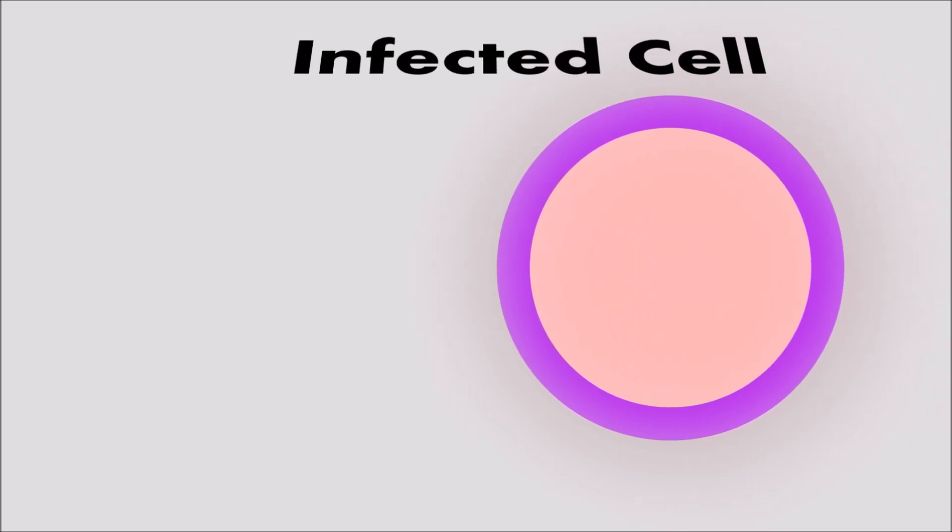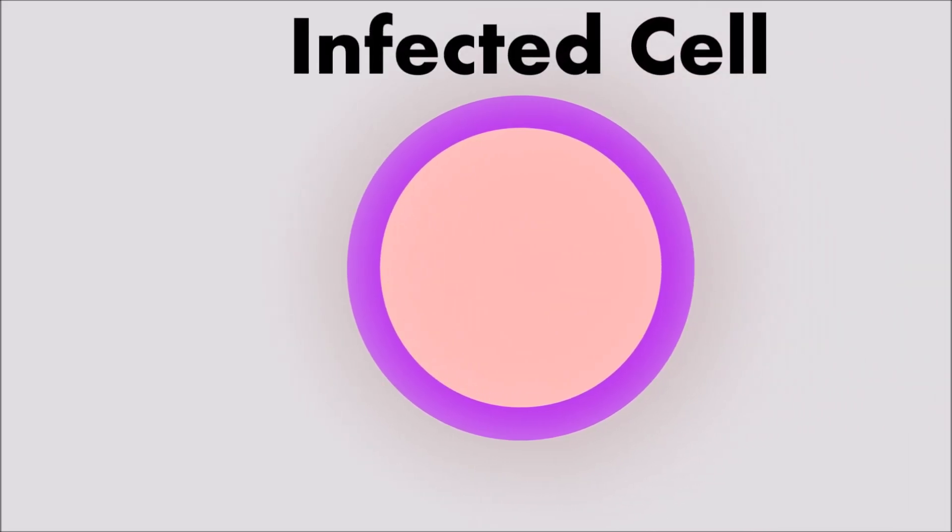Once infected, your body's cells begin to create millions of tiny yellow fever virus cells, which then go and attack other parts of your body.